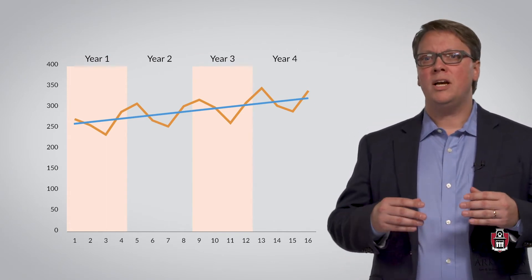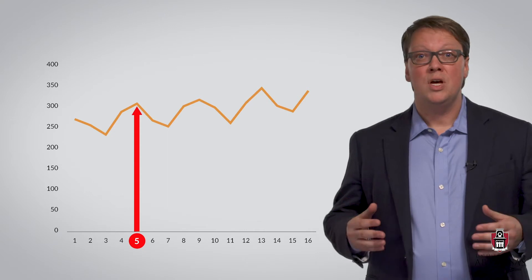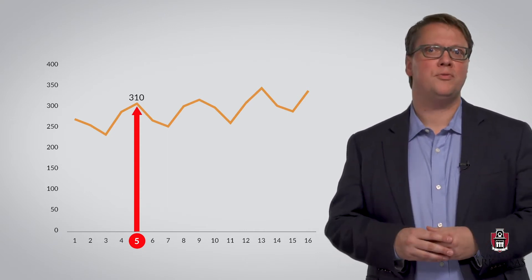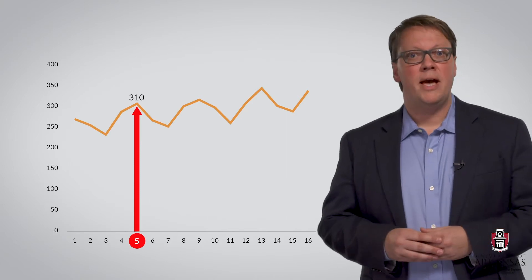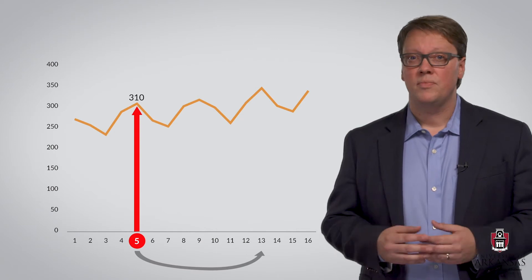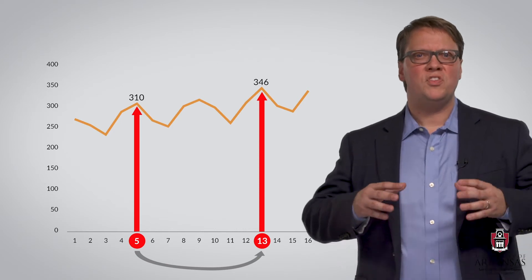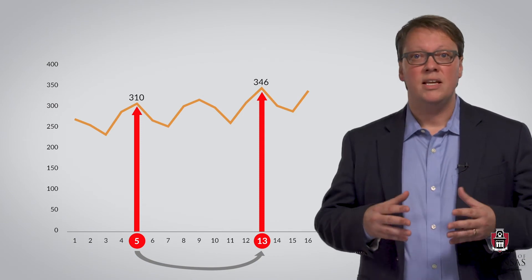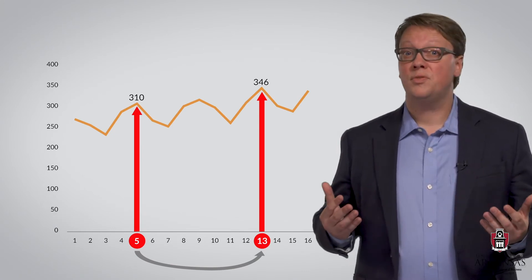To begin our exploration of how this particular technique works, let's take a look at period 5, where demand was 310 units. Notice that period 5 is the first quarter of the second year. Now let's look at demand in the first quarter of year 4, which is period 13. Demand in this period was 346 units. Notice that we observe the same seasonal peak in both periods 5 and 13. In addition, the increase in demand over these two years is an indication of the positive trend.